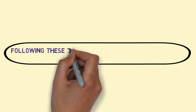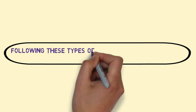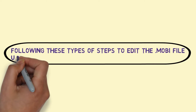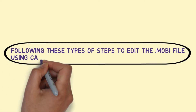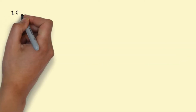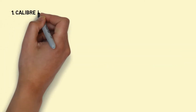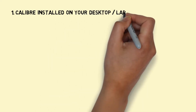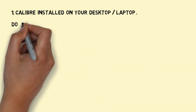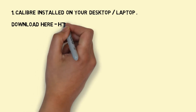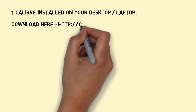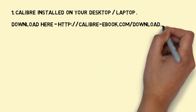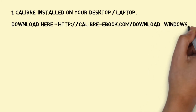Following these steps to edit the Mobi file using Calibre. Step 1: Calibre installed on your desktop or laptop. Download here: calibre-ebook.com/download/windows.